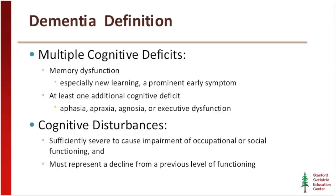Dementia is, by definition, an impairment of cognitive deficits — primarily memory, and especially new learning as an early prominent symptom, later progressing to involve old memories. But in order for there to be dementia rather than just amnesia, there must be at least one additional cognitive deficit: aphasia, apraxia, agnosia, or executive dysfunction. It also has to cause impairment of occupational or social functioning and must represent a decline from a previous level of functioning.